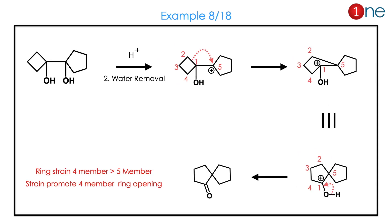Let us look at the next question. You have a two-ring system with a diol — one is 4-membered and one is 5-membered. Protonation happens to relieve strain. The 4-membered ring is strained, so the cation forms on the opposite side. The 4-membered ring opens, giving 5-membered rings on either side. The cation forms near the 5-membered ring and strain is relieved. The ring strain of the 4-membered ring is higher than the 5-membered ring, so it is a strain-assisted reaction.